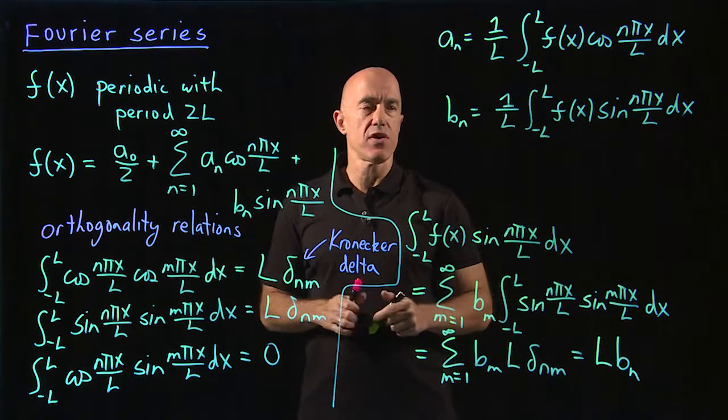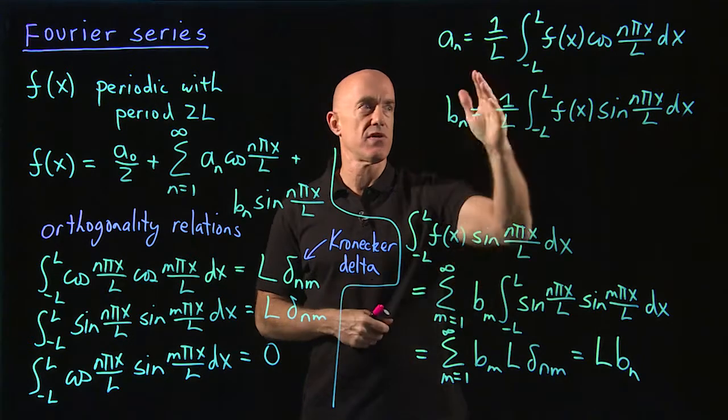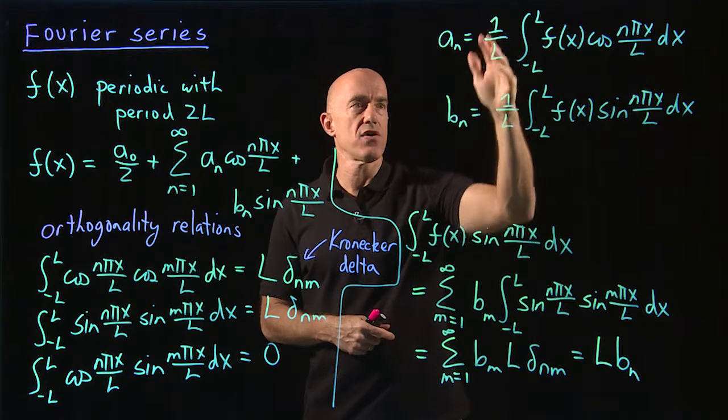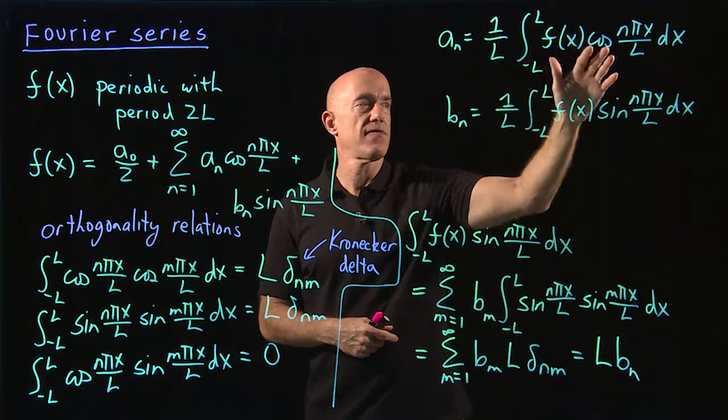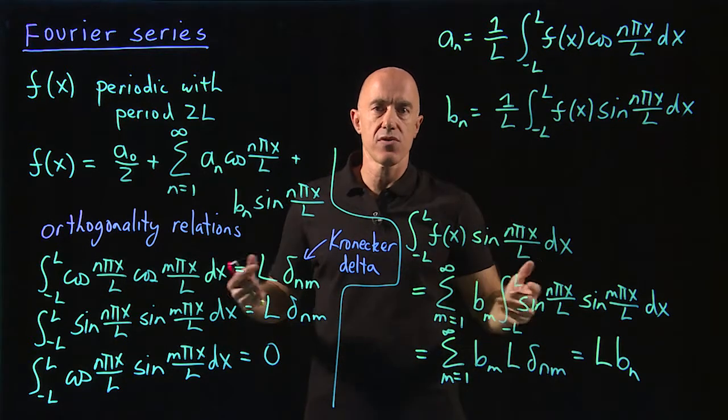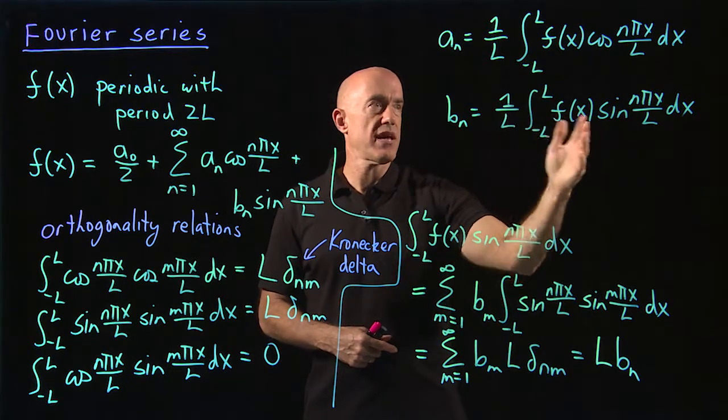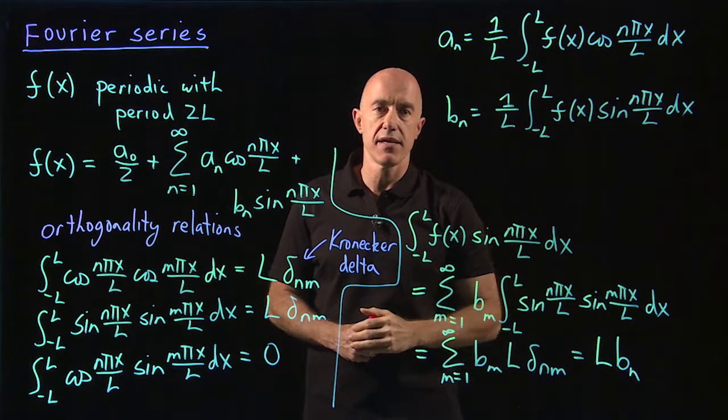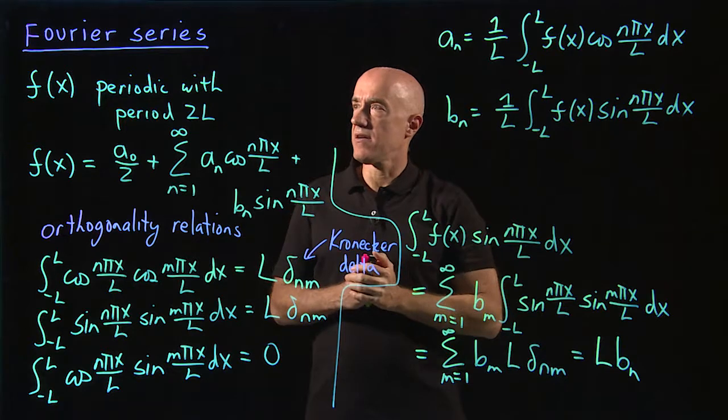After the derivation, what you find is that you can write the coefficients in terms of integrals over f. A sub n is 1 over l times the integral from minus l to l of f of x times cosine n pi x over l dx. B sub n is another integral where instead of multiplying f of x by cosine, you multiply by sine.